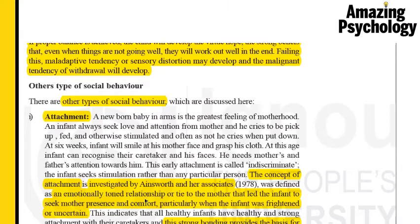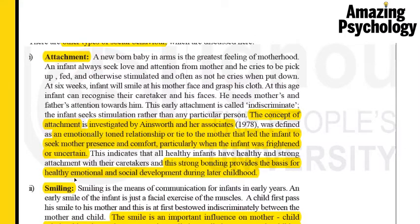The first additional social behaviour is attachment, investigated by Ainsworth and her associates. Attachment is an emotionally toned relationship — a tie to the mother that leads an infant to seek the mother's presence and comfort, especially when the infant is frightened or uncertain. It is basically the development of a bond between the mother and the child. Having that bond is needed for healthy emotional and social development during later childhood.